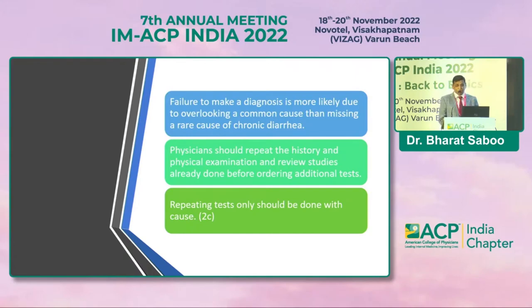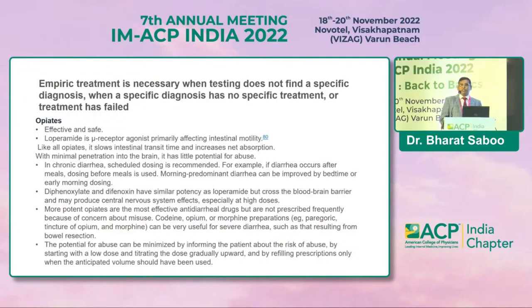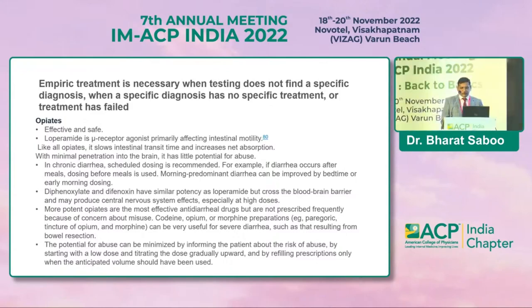Empiric management is needed when testing does not find a specific diagnosis, or when a specific diagnosis has no specific treatment or treatment has failed. Opiates are the first choice — effective and safe. Loperamide, a mu receptor agonist, slows intestinal transit time and increases net absorption, with minimal penetration into the brain, giving it low abuse potential. In chronic diarrhea, scheduled dosing is most important.